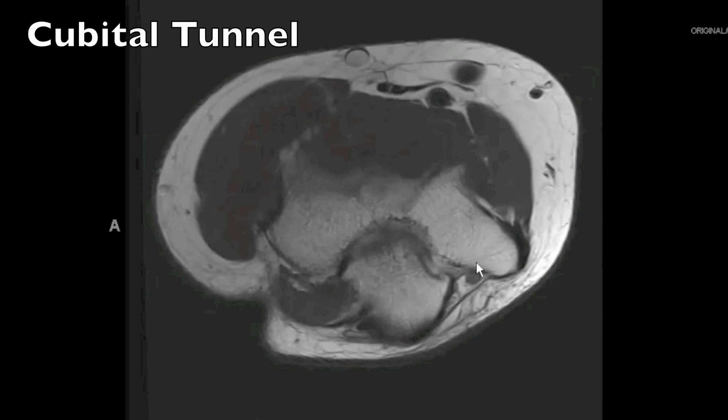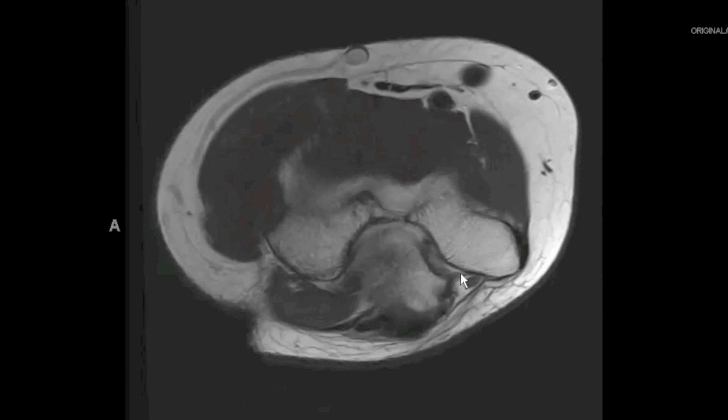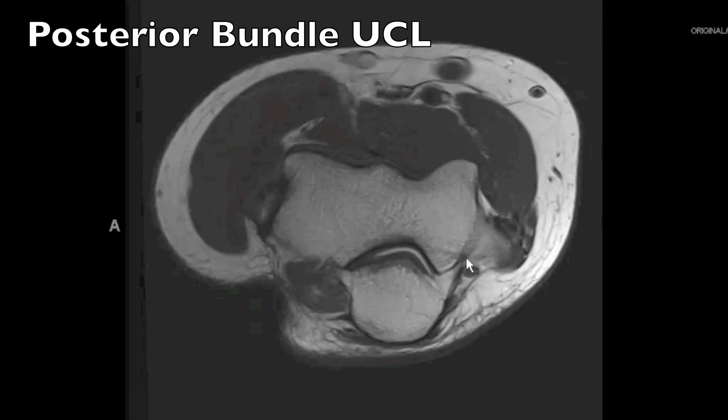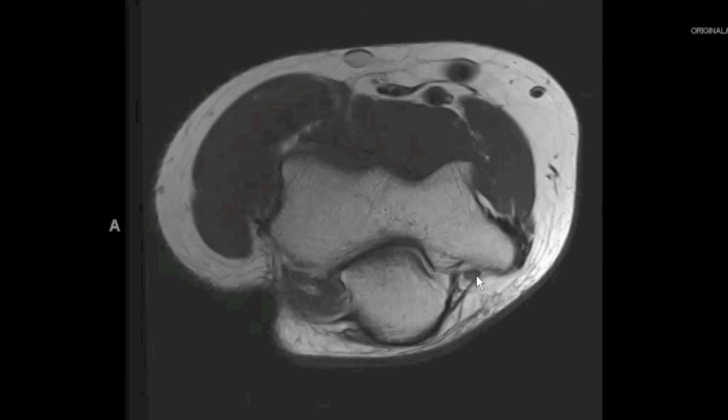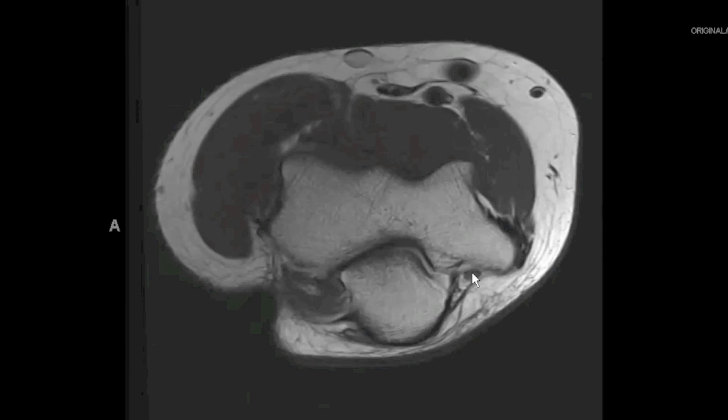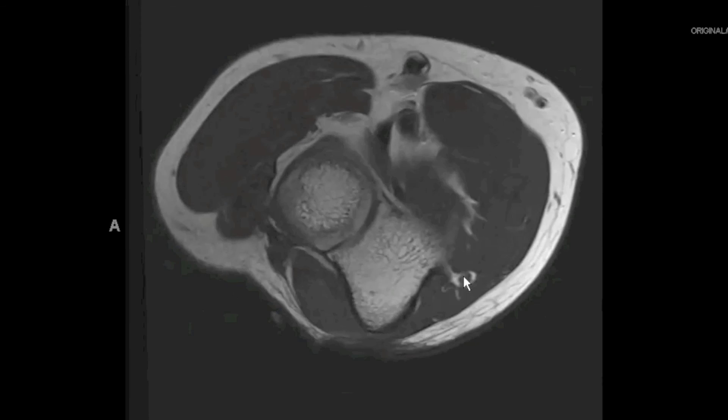Medially, as we extend distally, this is the area of the cubital tunnel. The floor of the cubital tunnel is made up by the posterior bundle of the ulnar collateral ligament, which we see best on axial images. The roof of the cubital tunnel is made by Osborne's fascia, also known as Osborne's ligament. These two structures — Osborne's ligament and the posterior bundle of the ulnar collateral ligament — help to stabilize the ulnar nerve at the level of the cubital tunnel. If you have disruption of Osborne's ligament, the ulnar nerve may subluxate medially along the medial epicondyle.